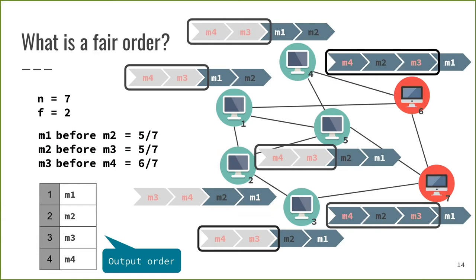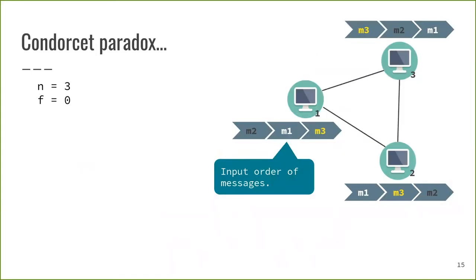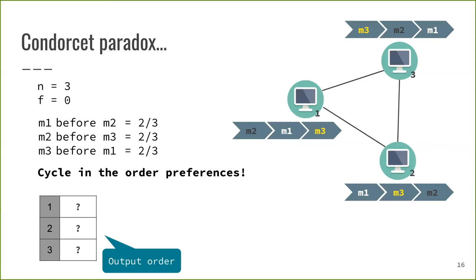This is great, but it has been shown that such preference votes can lead to cycles. This situation is described in social choice theory and known as the Condorcet paradox. This example demonstrates three honest processes with different local input orders. If you count again how many times M1 appears before M2, there is a majority of 2 out of 3, namely process 1 and 3. M2 appears before M3 also for 2 of the processes, process 2 and 3. But M3 appears also twice before M1 for process 1 and 2. Hence, this order according preference votes leads to a cycle and leaves the decision for a fair order impossible.